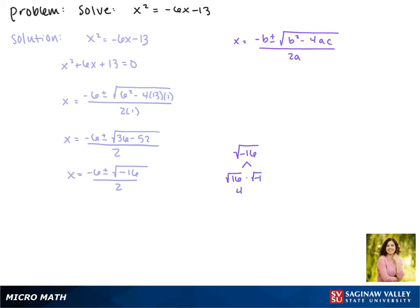This gives us 4 times i. Plugging this back into our equation, we get x equals negative 6 plus or minus 4i, all divided by 2.